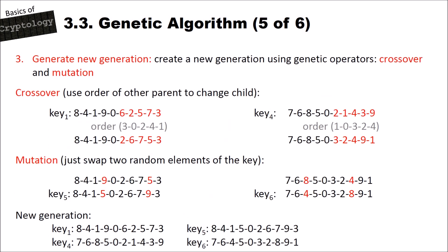In the next step, we create a new generation using genetic operators — in our case, crossover and mutation. Crossover means taking two parent keys and crossing them over to generate two child keys. For the transposition cipher, you take the left part of key one and the right part, then reorder the right part based on the corresponding part of the other parent key, and vice versa for the second child key.